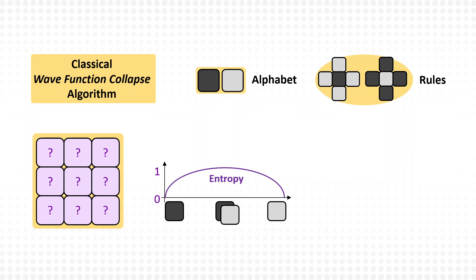If there are several tiles with the same entropy, it chooses one at random. This undefined tile is randomly assigned according to the allowed choices. Then, the next iteration starts, and so on.